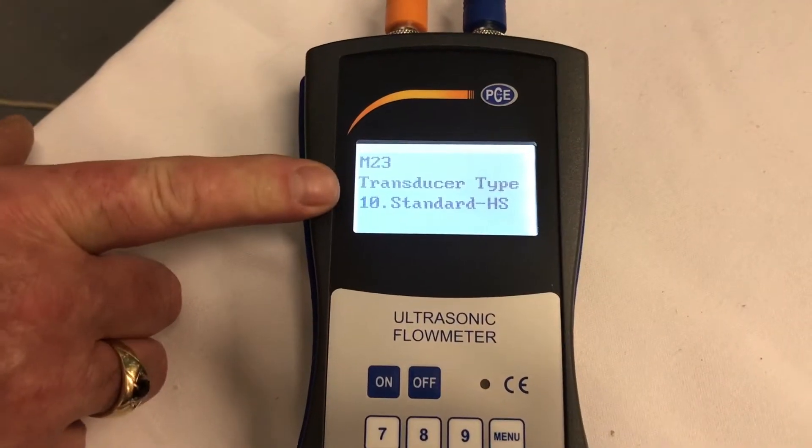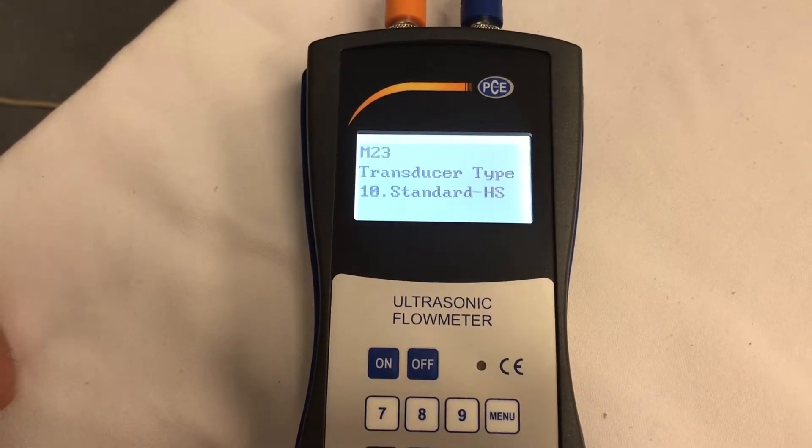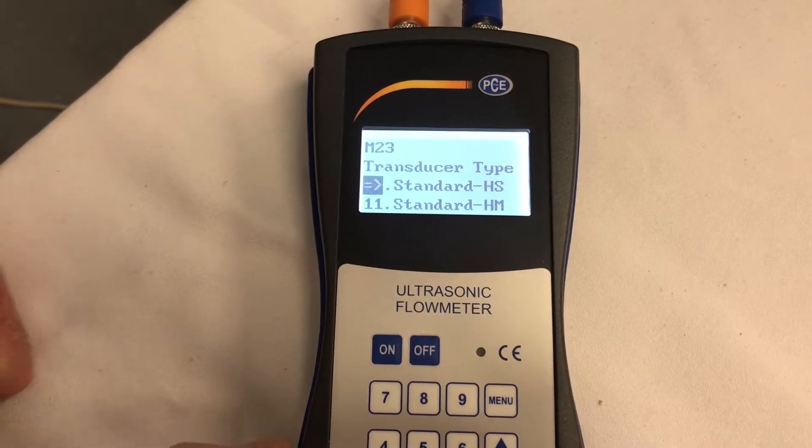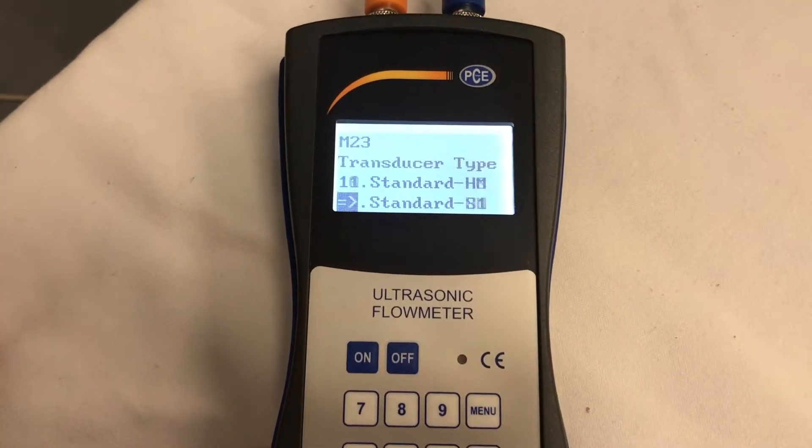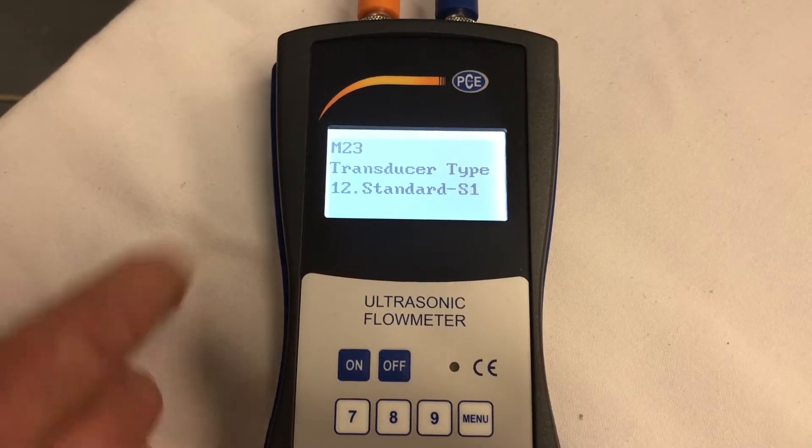Now we're going to select our transducers type. So we go enter, and we go down arrow until we get to S1. Standard S1, enter.